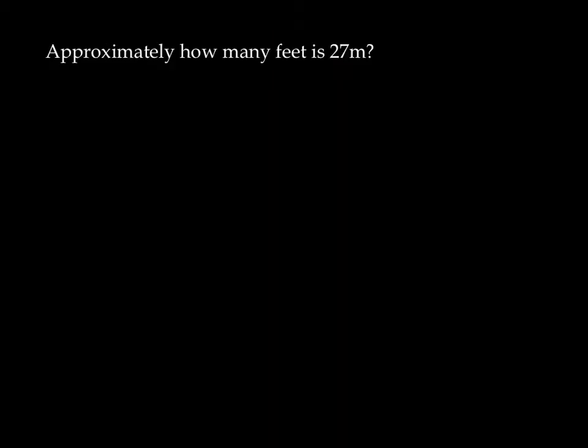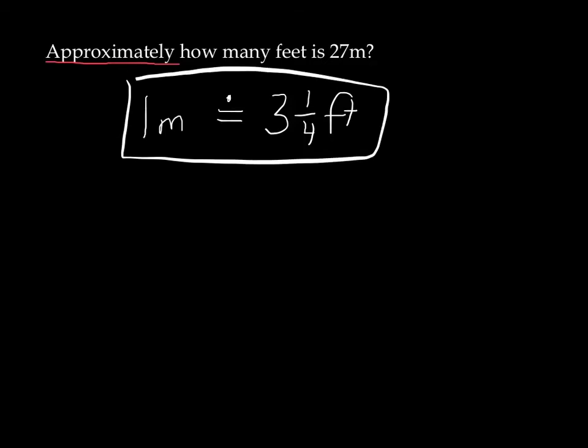So we're going to do two questions. The first question here is approximately how many feet is 27 meters? If you look on your sheet or in your textbook, you will see that one meter is listed as being equivalent to three and one quarter feet. Now we should be careful, it's not equal. So we put a little dot above. That signifies that this is approximately true. The reality is slightly different from this. So one meter is approximately three and one quarter feet. We can now use this conversion in order to answer our question.